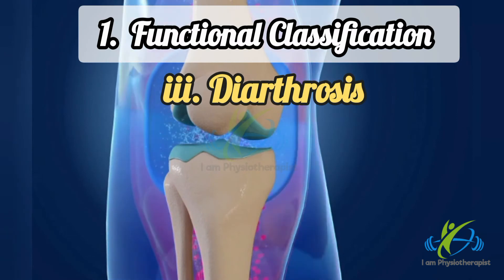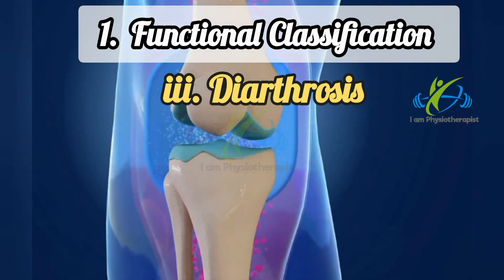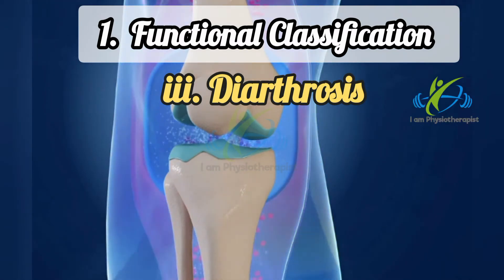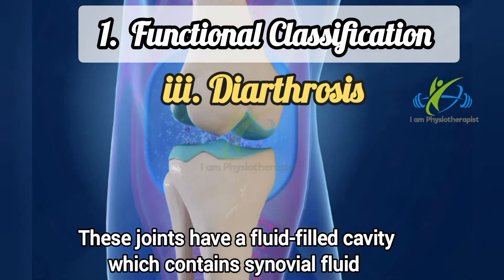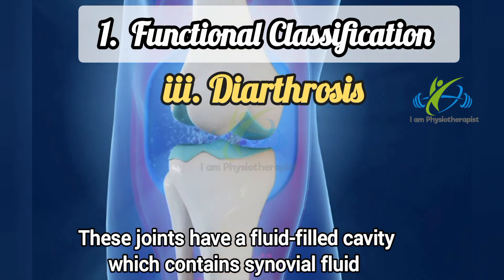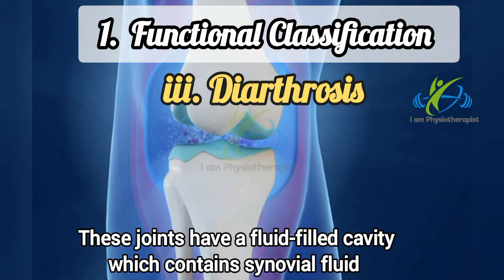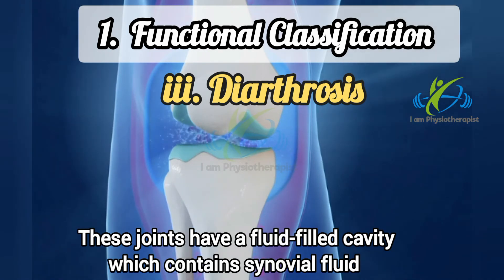Diarthrosis are freely movable joints. These joints have a fluid-filled cavity between articular surfaces which contains synovial fluid. This fluid acts as a lubricant.